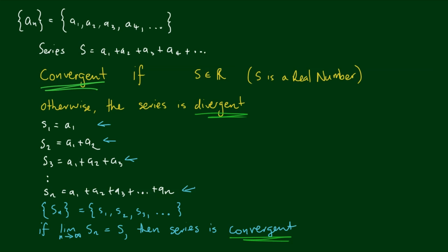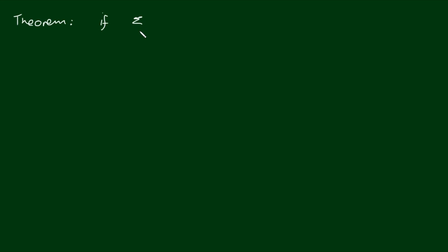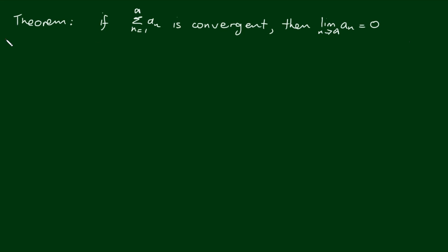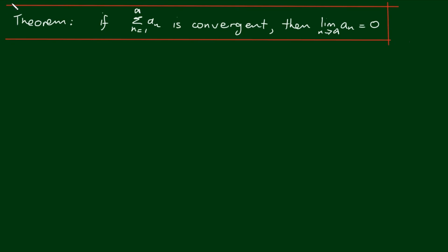The fascinating thing is: how can we add up an infinite number of terms and get a finite result? Well, the only way that can happen is if these terms are getting smaller and smaller, such that the terms are approaching zero. So that means we have this theorem: if the series — the sum from n equals 1 to infinity of a_n — is convergent, then the limit as n approaches infinity of a_n is equal to zero. Let's put a big box around this theorem, because it will be the basis for the test for divergence.